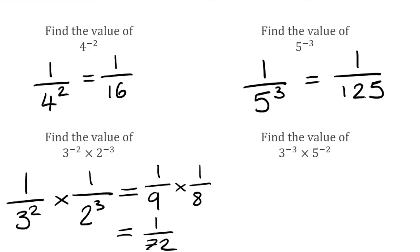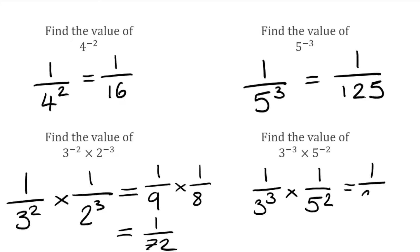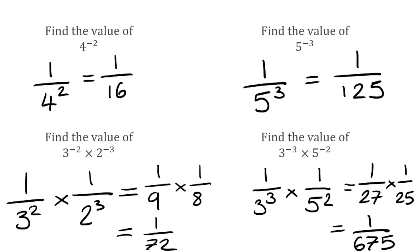For this next question, we've got 3 to the power of negative 3 multiplied by 5 to the power of negative 2. The first one becomes 1 over 3 to the positive 3, multiplied by 1 over 5 to the positive 2. Simplifying: 1 over 27 multiplied by 1 over 25. Then 27 times 25 — 25 squared is 625, plus another 2 lots of 25 (which is 50) — gives us 675. So our final answer is 1 over 675.